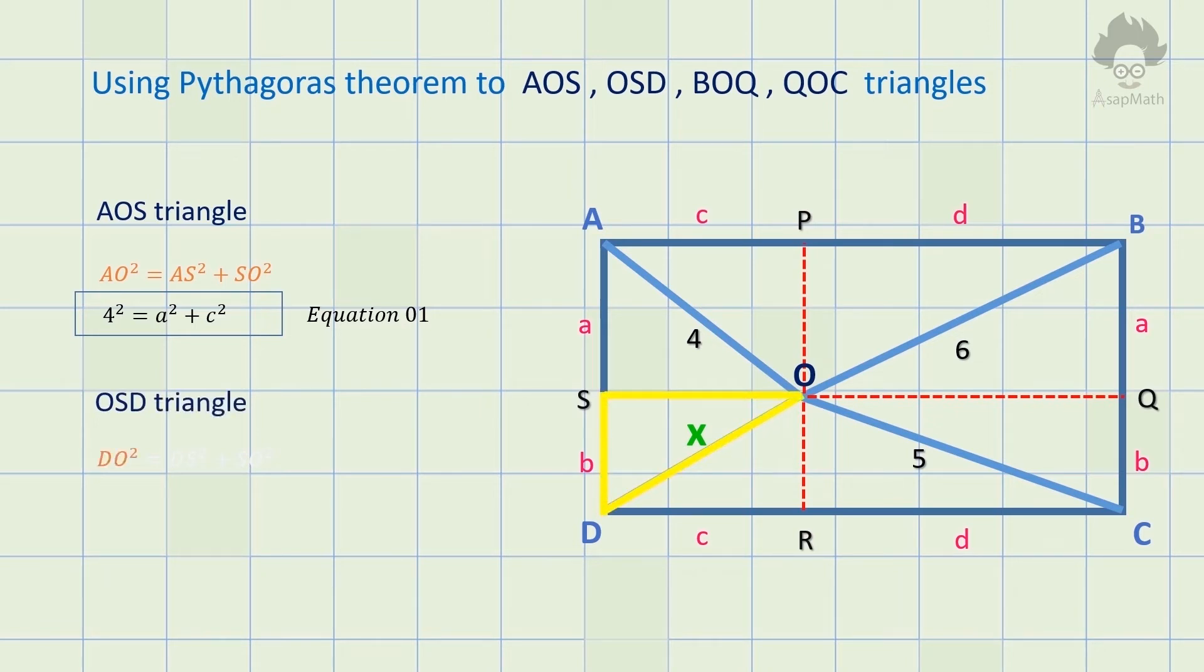DO squared equals DS squared plus SO squared, so x squared equals b squared plus c squared and name this as equation 2.